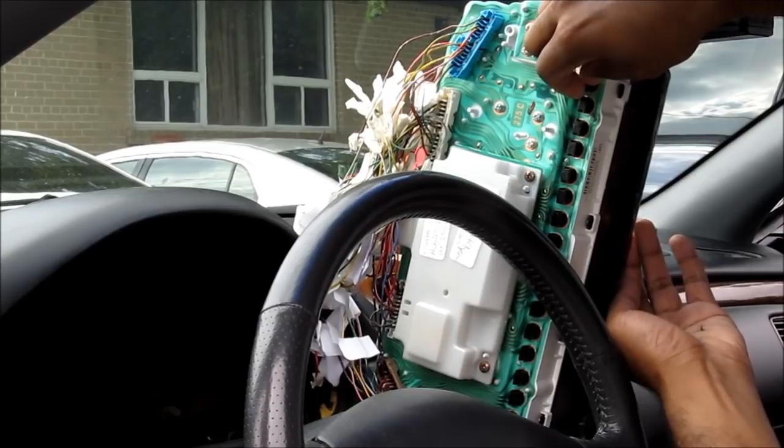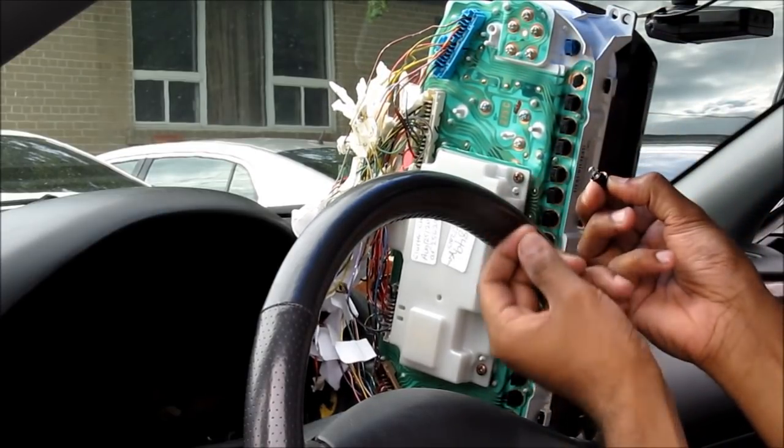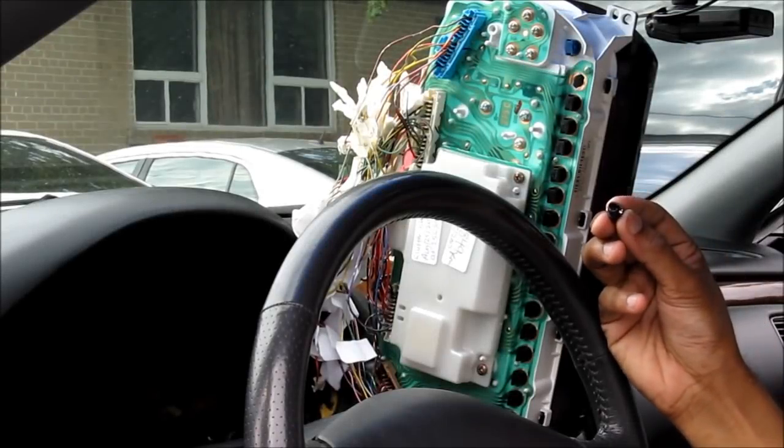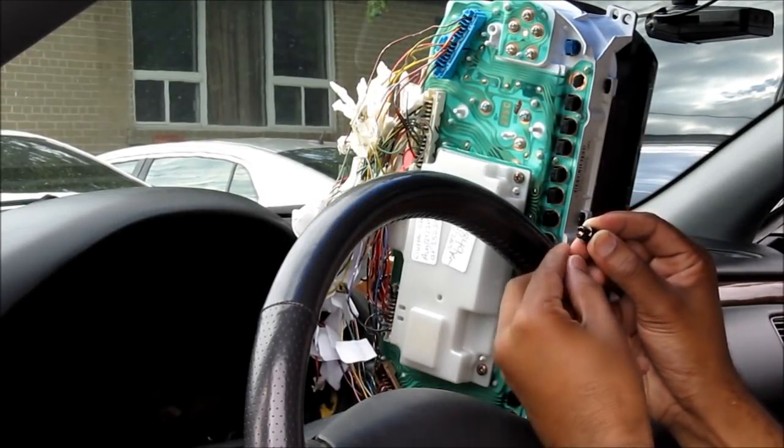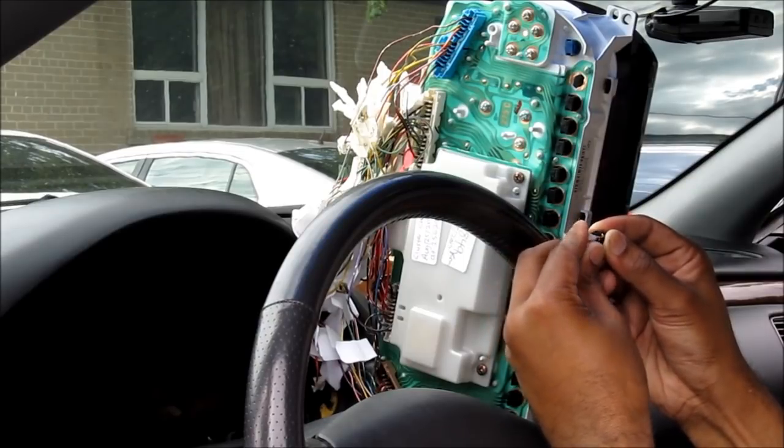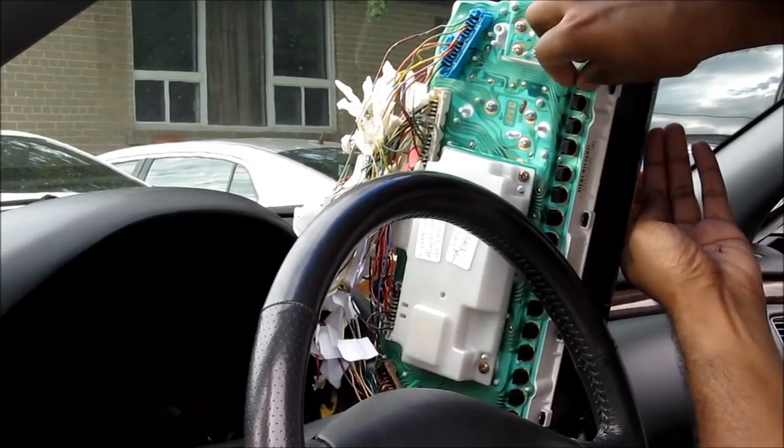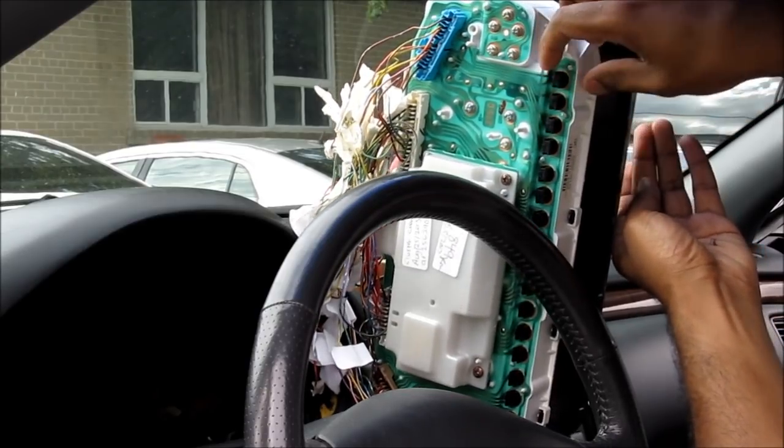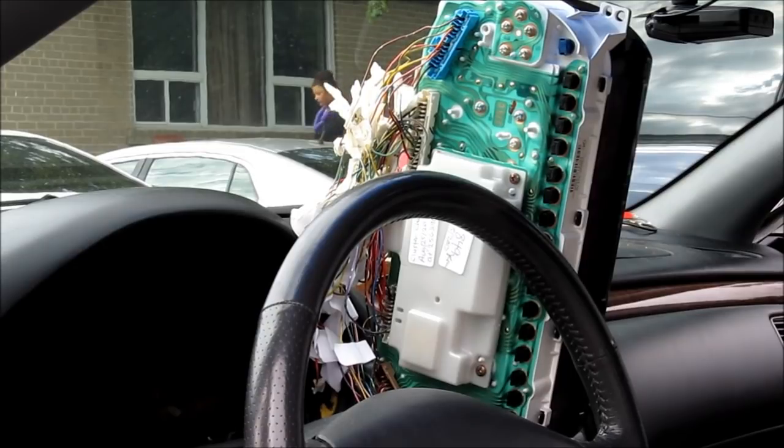To remove them simply twist them, pull them out, and then you can pull off the wedge bulb. I'm replacing mine with these wedge style LED bulbs. So all you have to do is wedge it in and then insert it and test it out. If it doesn't work, reverse the polarity and then try again.